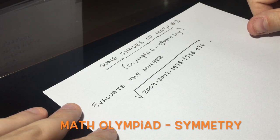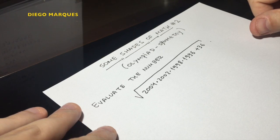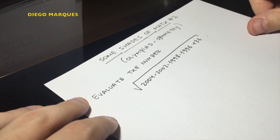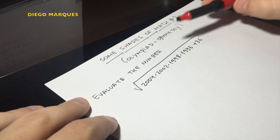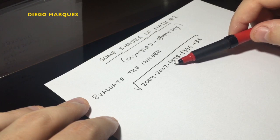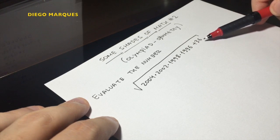I would like to show you something about this kind of technique for solving some kind of Olympiad problems. So the problem is evaluate the number square root of 2004 times 2002 times 1998 times 1996 plus 36.